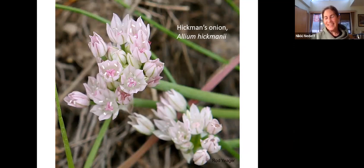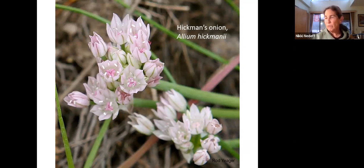Little onions occur in grassland habitats. This one is very small and very rare. It occurs in the coastal grasslands — the remnant grasslands.